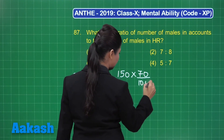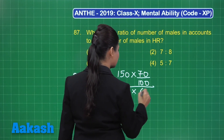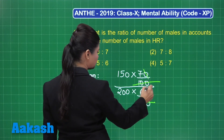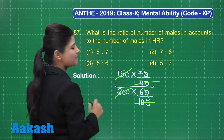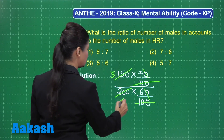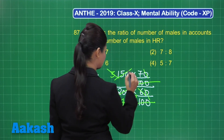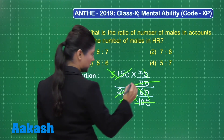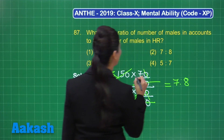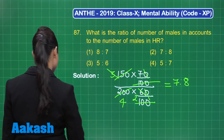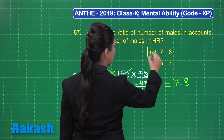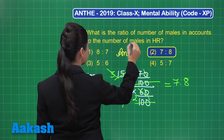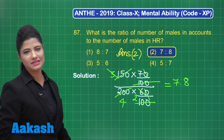The required ratio is 70% of 150 to 60% of 200. Simplifying: the 100s cancel, then 150 and 300 reduce by 50 giving 3 and 6, and 3 reduces 6 to 2. In the numerator we get 7, and in the denominator 4 × 2 = 8, giving 7:8. The correct answer is option 2.